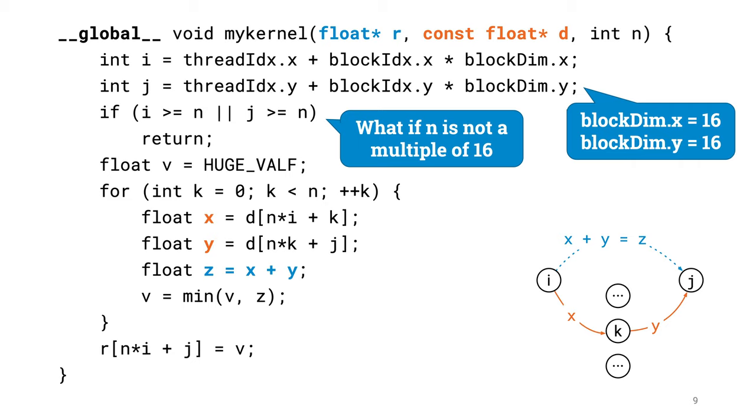Note that here pointers R and D have to point somewhere in the GPU memory, so that the kernel can read and write arrays R and D. So in the CPU-side code, we will need to allocate some GPU memory, move our input data there, and also copy the result back from the GPU memory to the CPU memory.